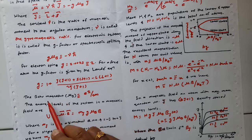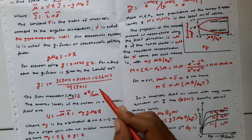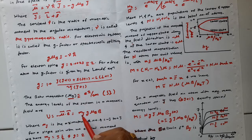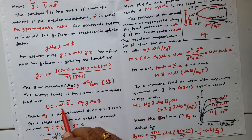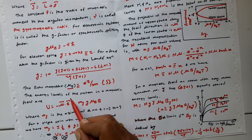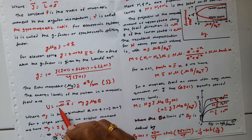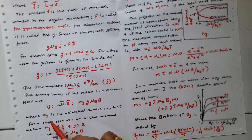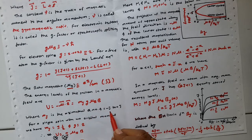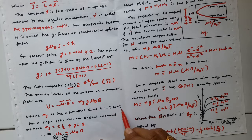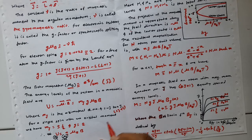The Bohr magneton μ_B is defined as eℏ/2m in SI units. The energy of the system in a magnetic field is U = −μ̄·B̄, which equals −m_J g μ_B B. Here m_J is the azimuthal quantum number, varying from −J to +J, giving 2J+1 values.